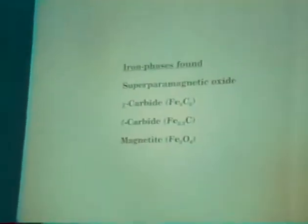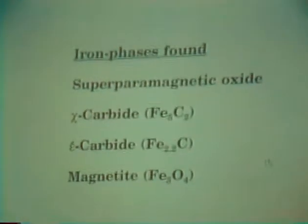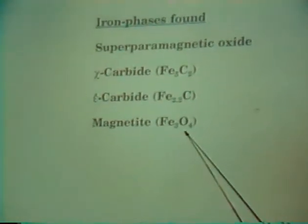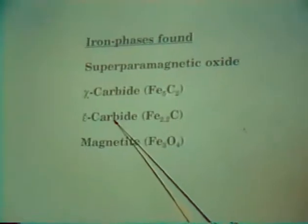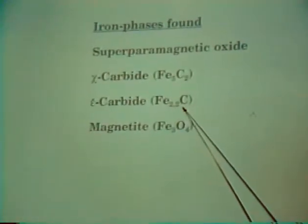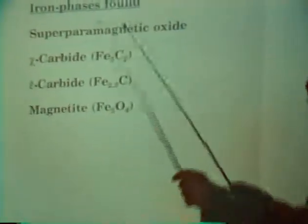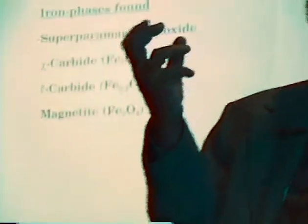As Dr. Bukur has pointed out, we have essentially found in both sets of catalysts, which are used catalysts, essentially four iron phases. They are magnetite Fe3O4, epsilon prime carbide which is Fe2.2C, chi-carbide Fe5C2, and an oxide with superparamagnetic behavior, which has a dimension of about 80 angstrom or less, which shows what is called relaxation phenomena, superparamagnetic relaxation phenomena in Mössbauer spectroscopy.